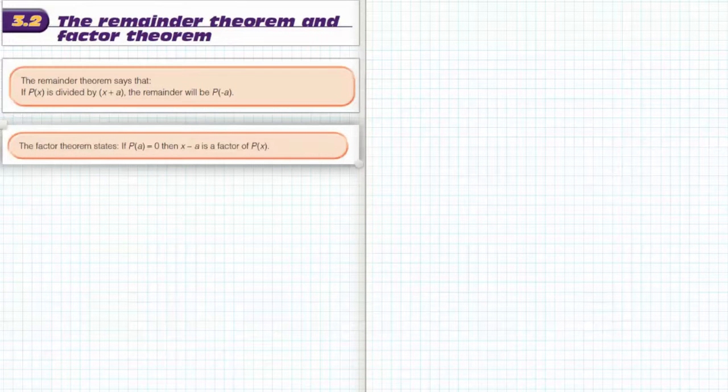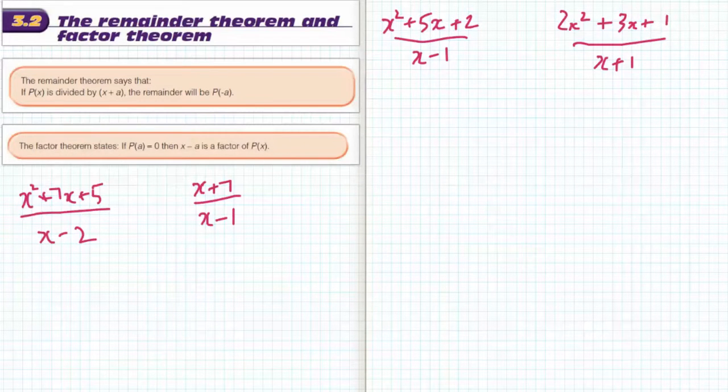This is for year 11 methods and it's work to cover 3.2, the remainder theorem and the factor theorem. We learned from the last lesson how to make these divisions. In case you're unsure, you can look at the video regarding the division of polynomials, and I'm just going to go ahead and do these.